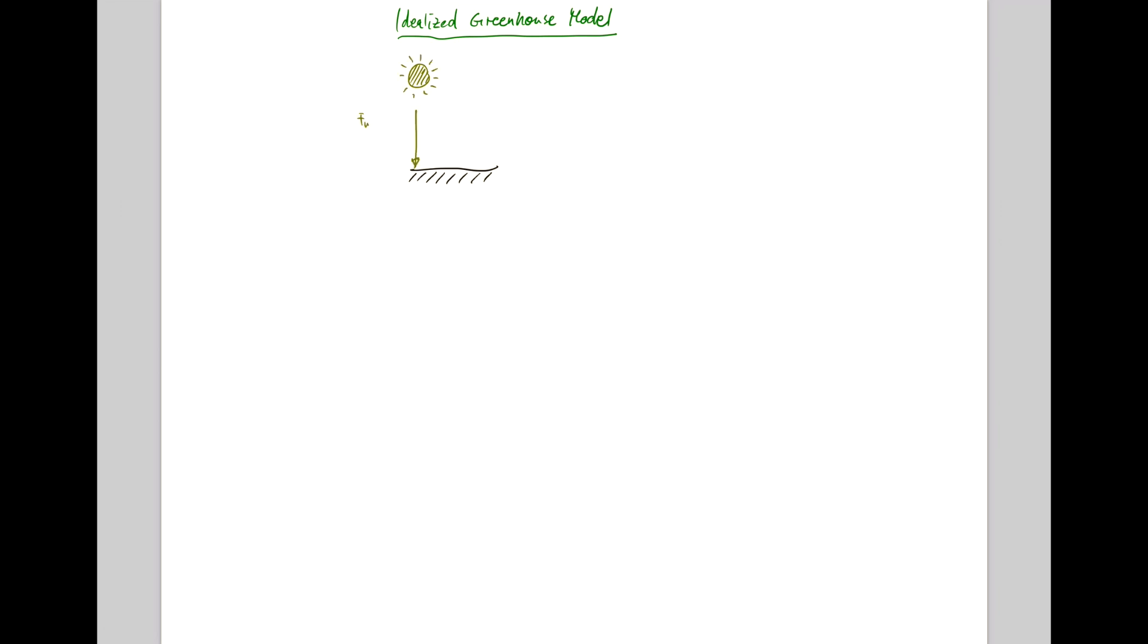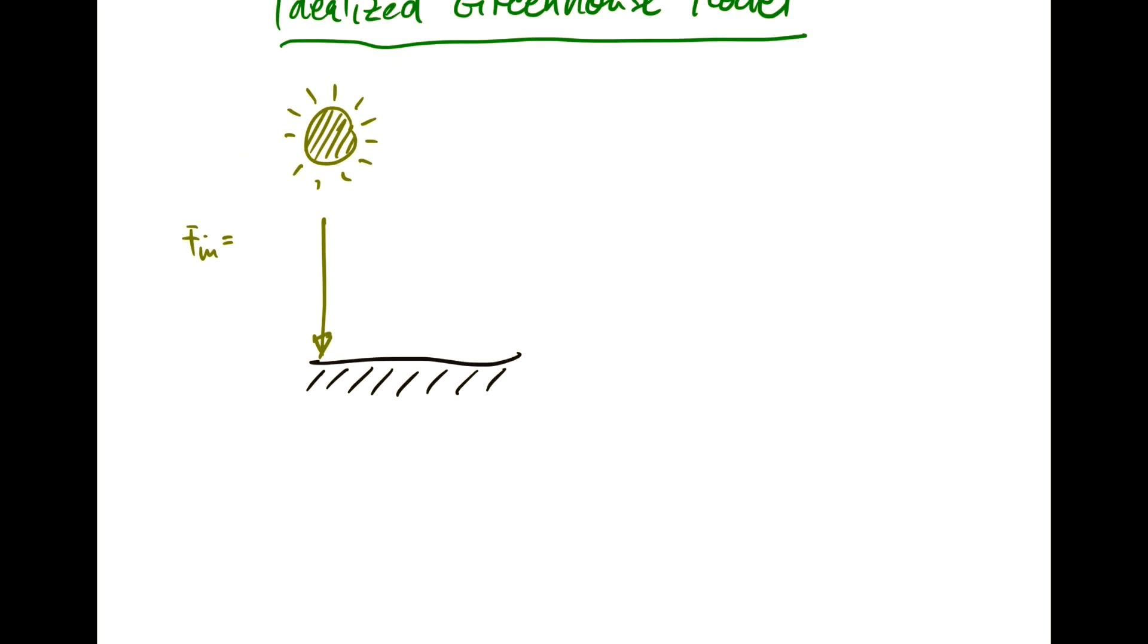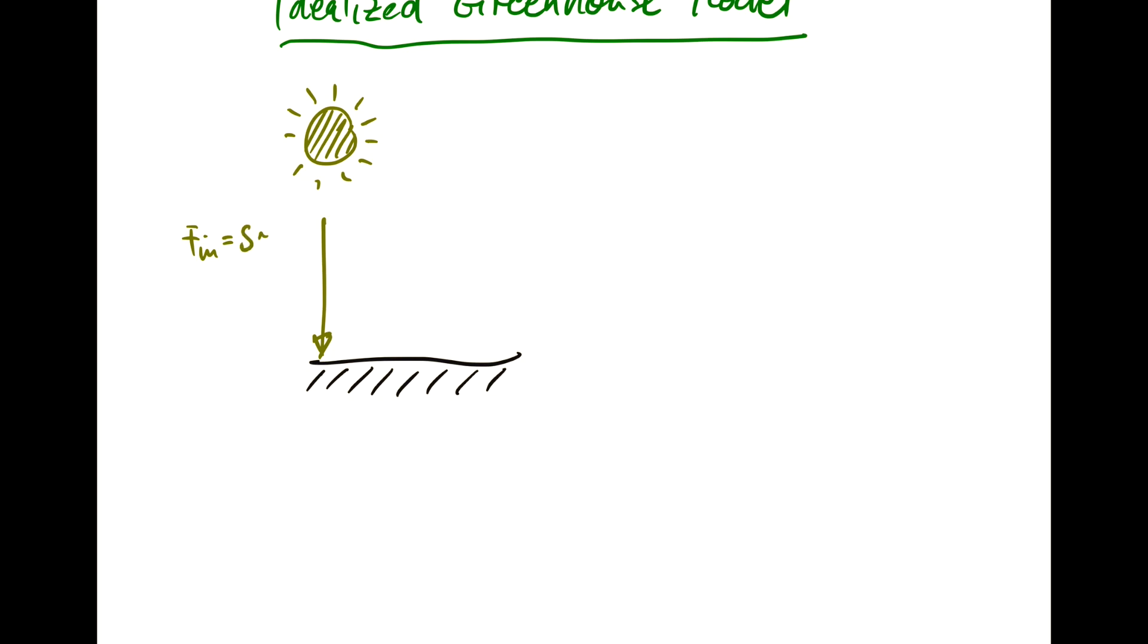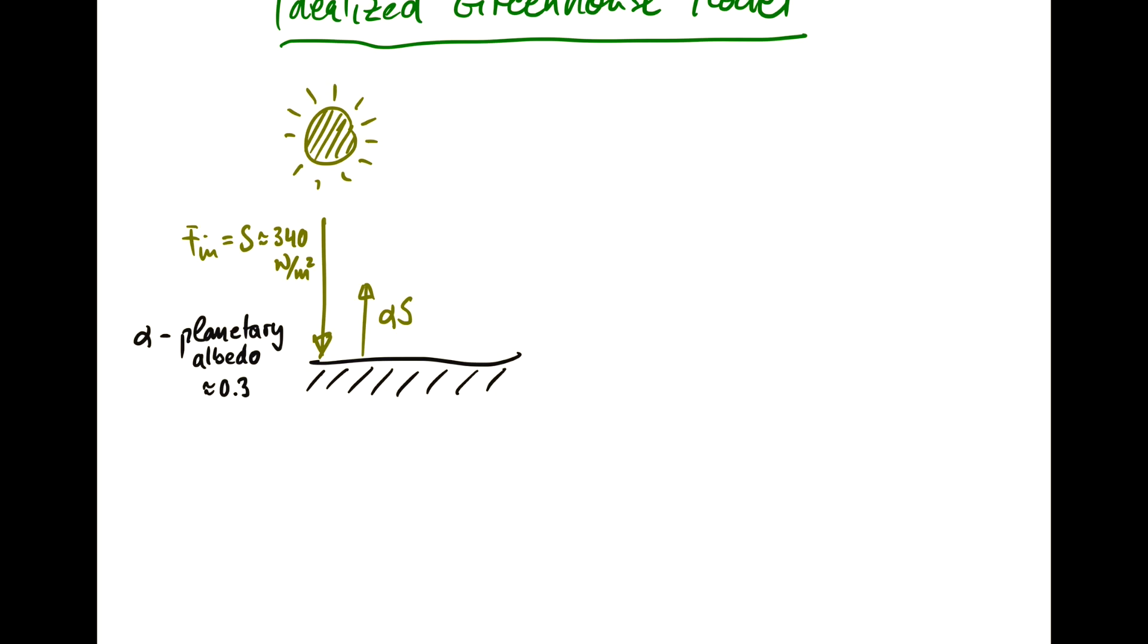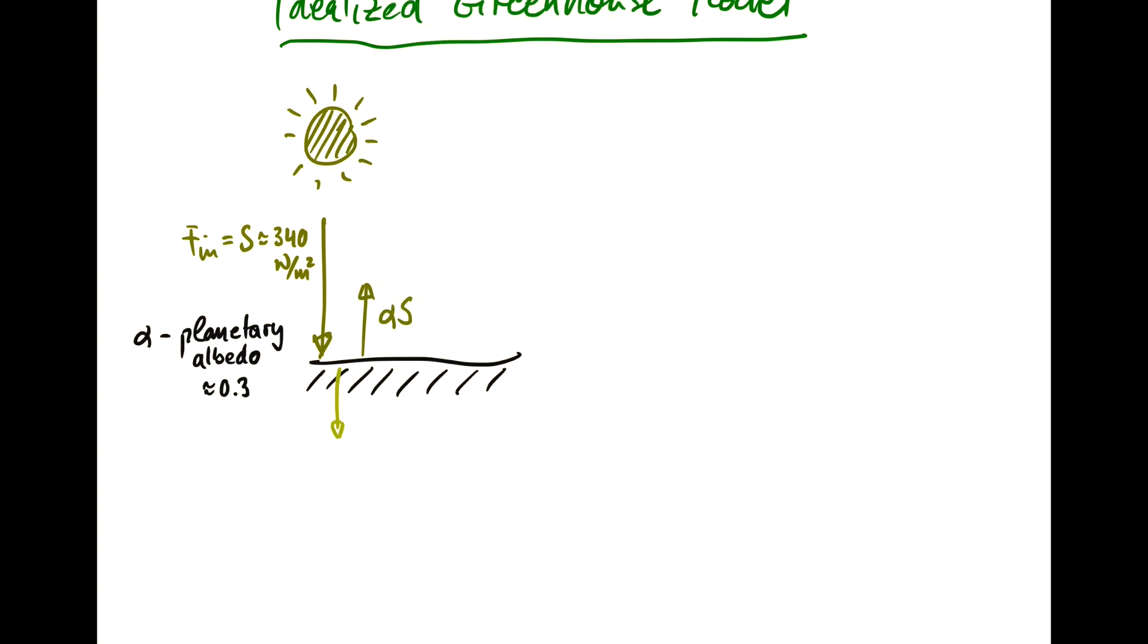The incoming energy flux F_in is our solar constant S, which is about 340 watts per meter squared. Not all of that gets absorbed by the surface. About 30% gets reflected, that's alpha S, alpha being the planetary albedo, which is about 0.3. So 30% gets sent back out, and 70% gets absorbed by the surface. That is (1-alpha) times S, which is 0.7 times the solar constant.